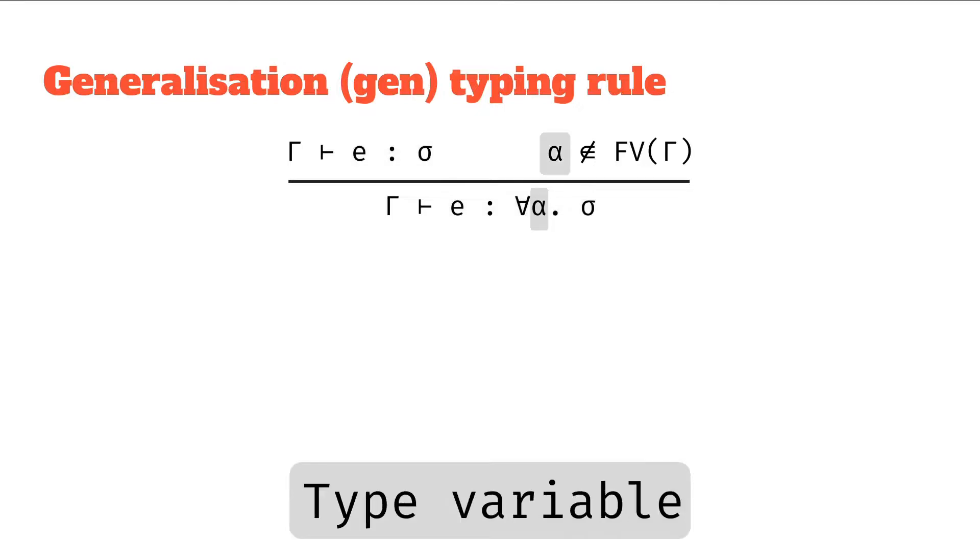We've also got our assignments, and then we've got some type variables, so we've got this type variable alpha. So by the premise at the top right we know this alpha is not in the free variables of the context, and also we add it as a for-all bound quantifier to the polytype sigma.